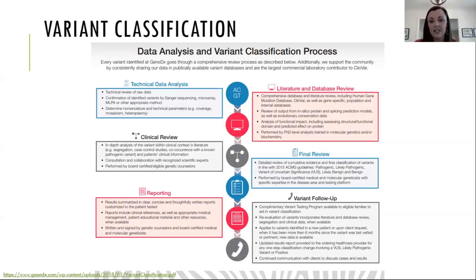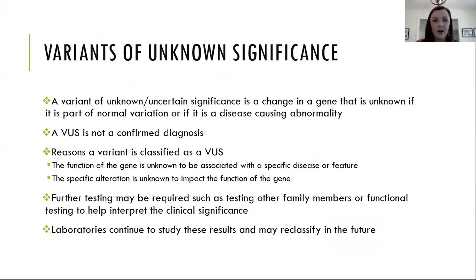Labs are constantly analyzing patients in their database to see if anything has changed and whether they need to provide updated information to providers. Reports can tend to be several pages long because there's a lot of data included. Variants of unknown significance are not confirming your diagnosis or denying your diagnosis — so be cautious with how you interpret those and be sure to talk with your providers. The labs are continuing to review them and it certainly is possible they may reclassify that abnormality in the future — either confirming it as the answer or ruling it out.